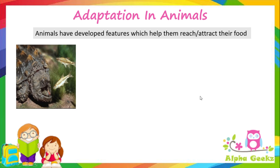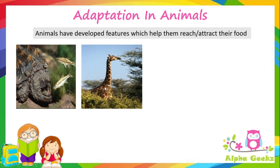The alligator snapping turtle lures its prey by opening its mouth and sticking out its tongue, which looks like a worm, then snaps its mouth shut the moment the fish takes the bait. The giraffe has a long neck, which it developed over a period of time in order to reach its food, as it typically lives in areas with high vegetation.